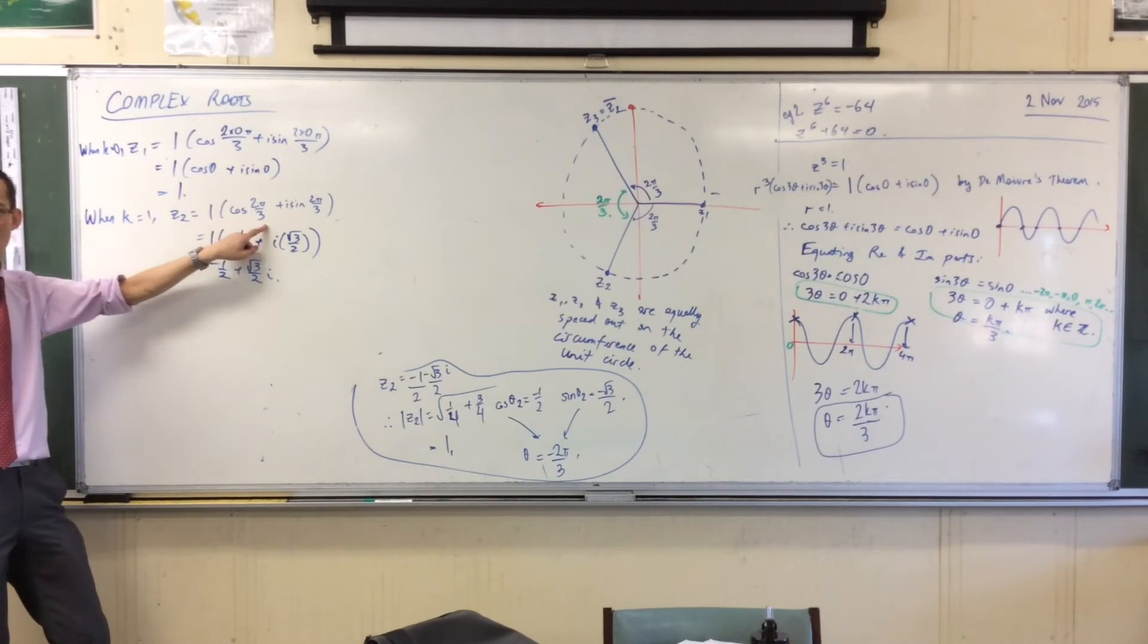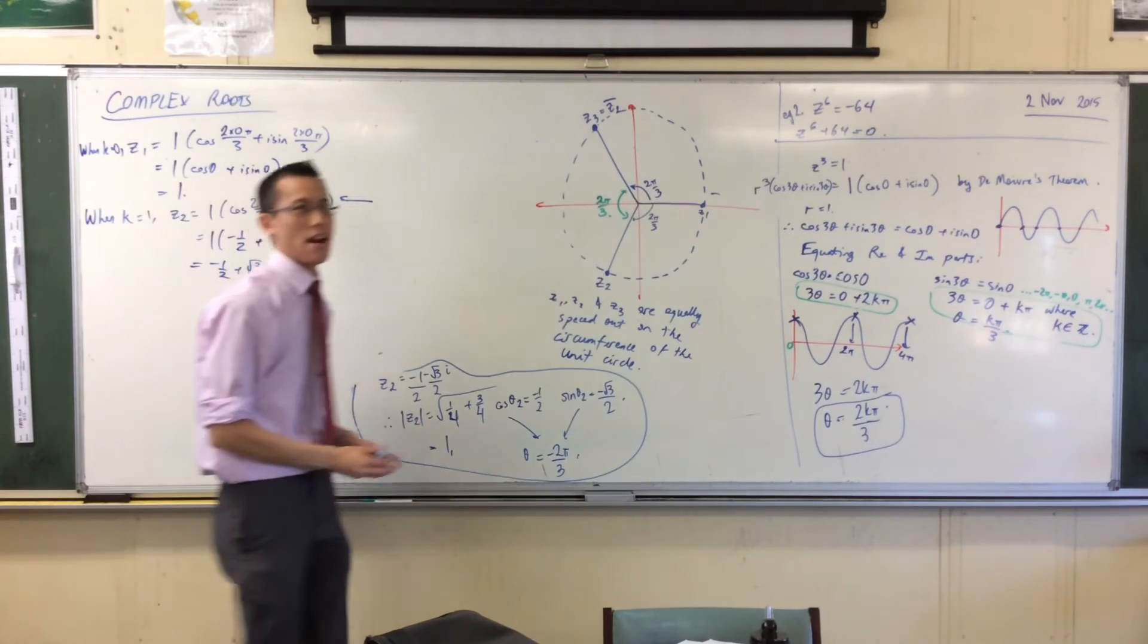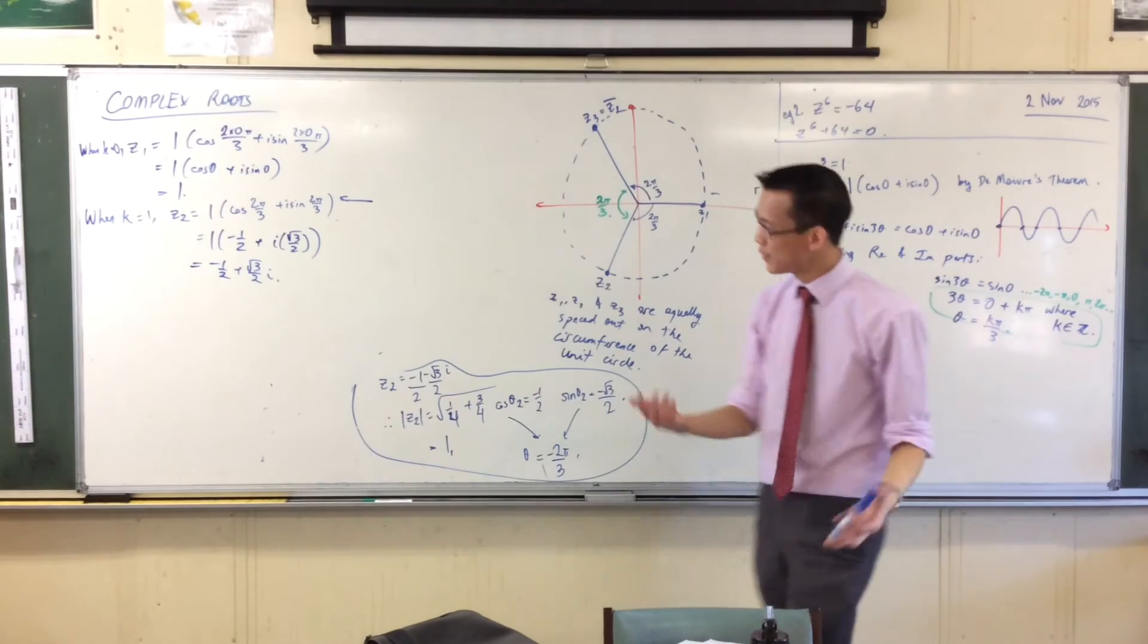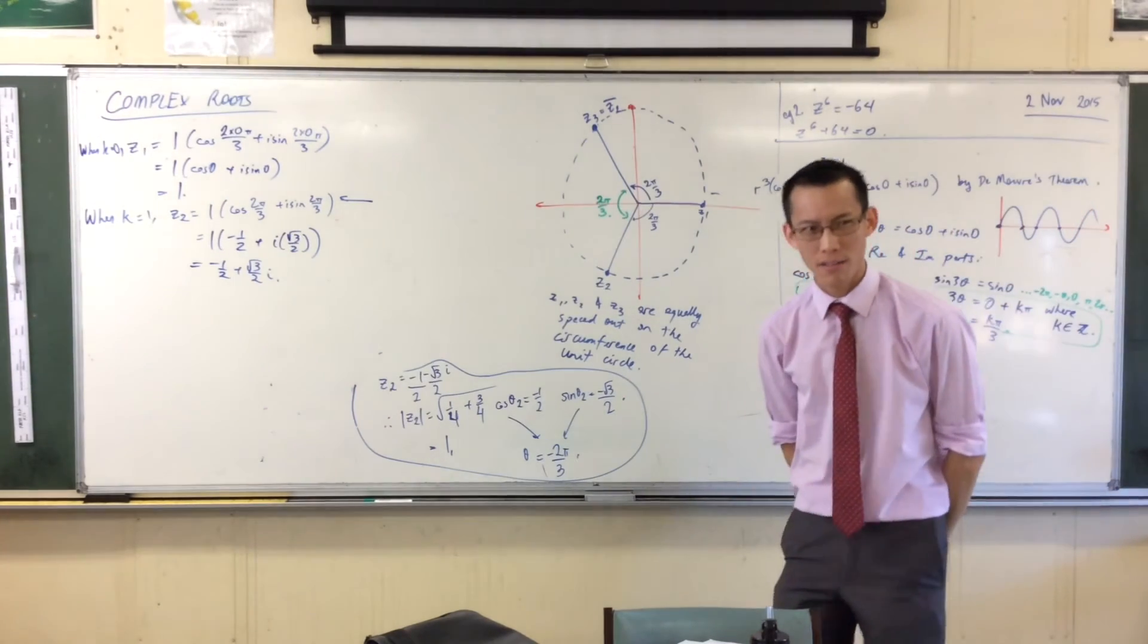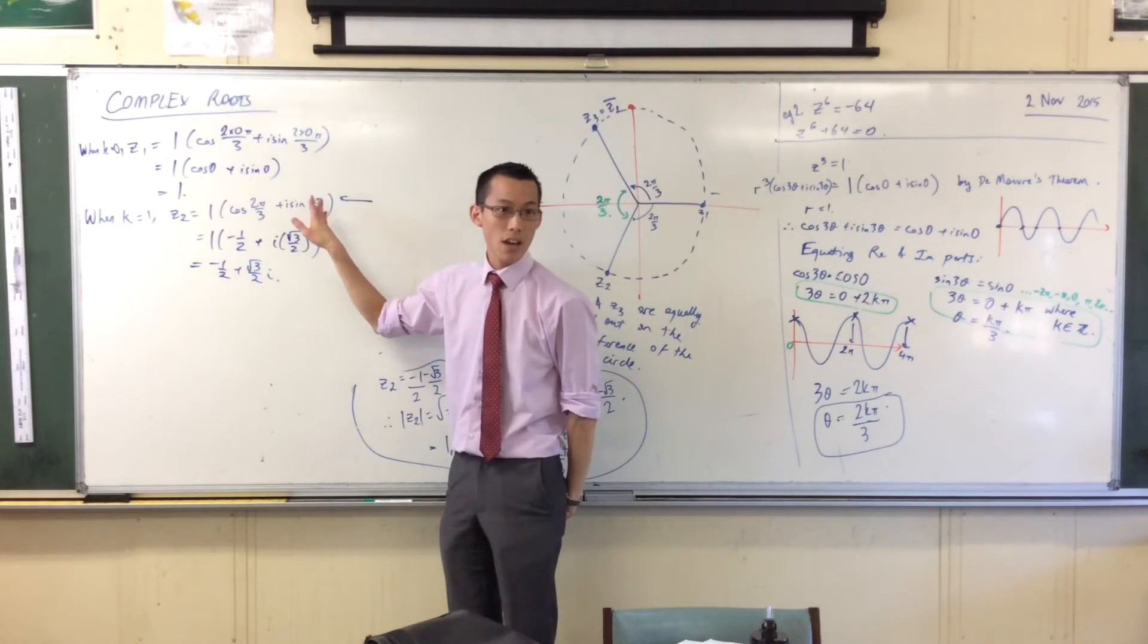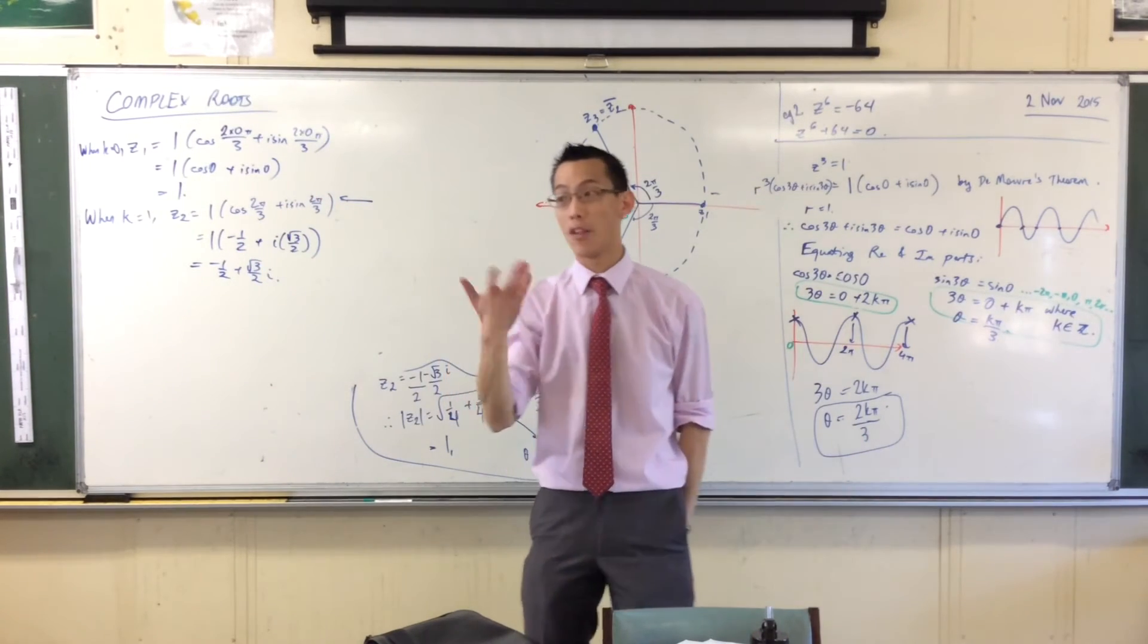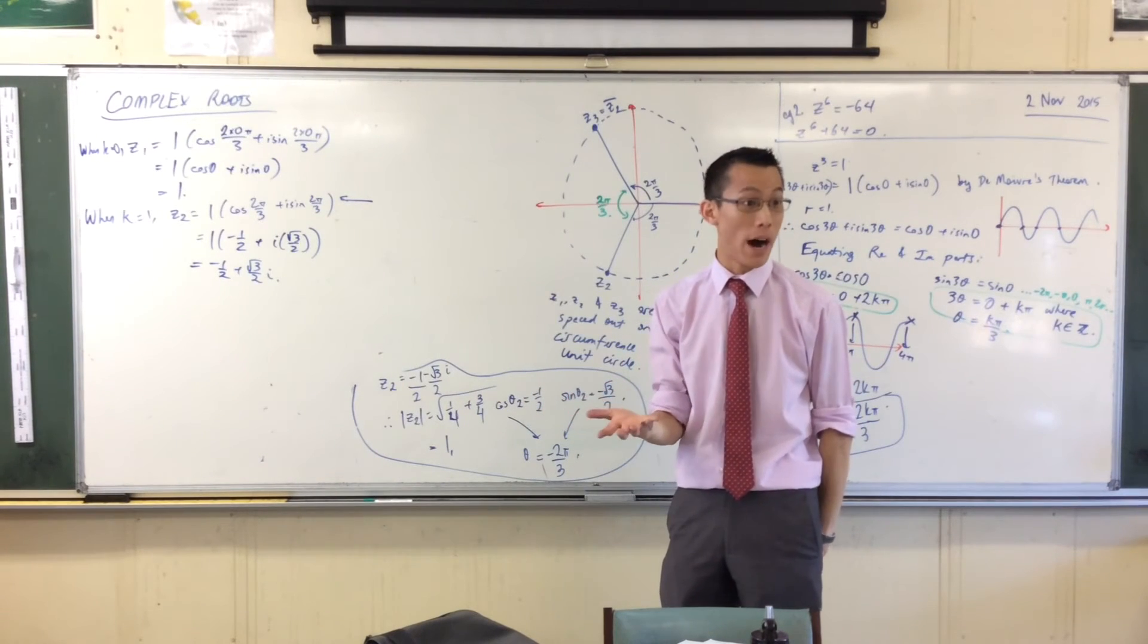Now, at this point here, when I know what the argument is when k equals 1, I can already see there's no point trying k equals 2. Or rather, even if you do, you're just going to make more work for yourself. Can you see why? k equals 2 is not a good way to go. When you put k equals 2 in here, you'll get 4 pi on 3. That's already outside the principal argument.